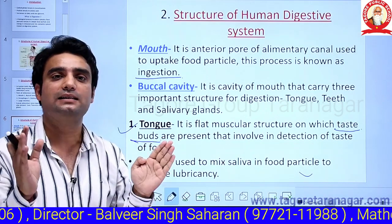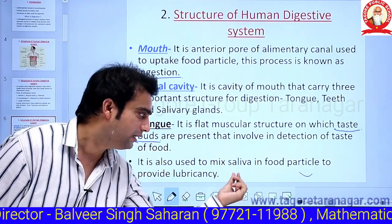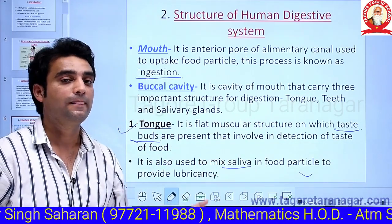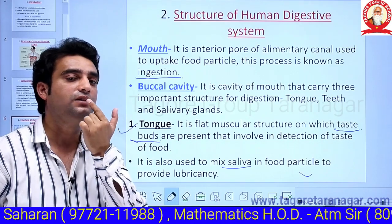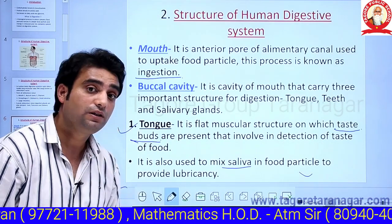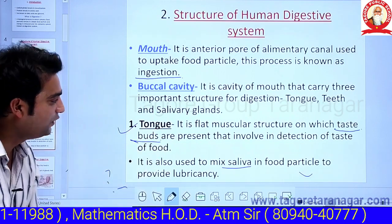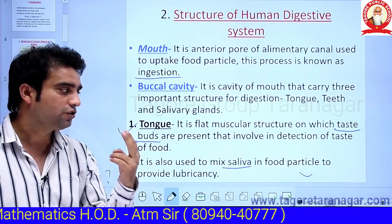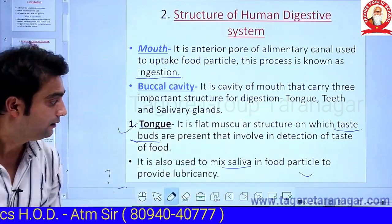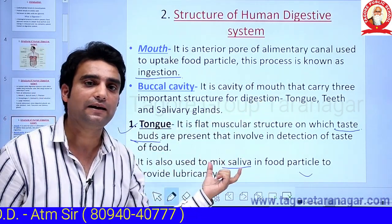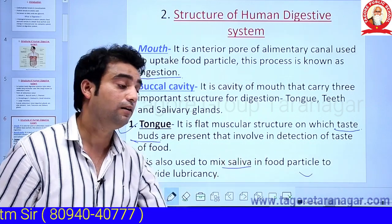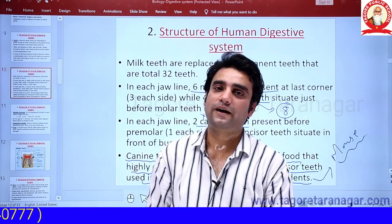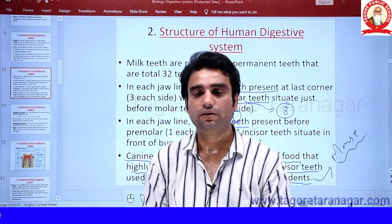The tongue also has a second function: the tongue is used to mix saliva. Inside the buccal cavity, salivary glands release a specific liquid known as saliva, and this saliva is mixed into food particles with the help of the tongue. So the tongue has two functions: one is the detection of the taste of food particles, and the second is the mixing of saliva into food particles. Dear students, stay at home, fight with corona — we will meet tomorrow. Thank you.